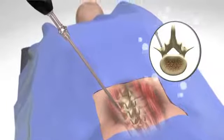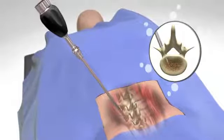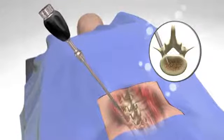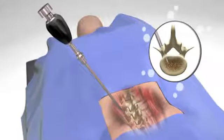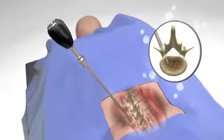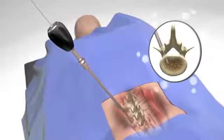Continue to advance the cannulated awl under fluoro. Keeping the cannulated awl in place, remove the inner stylet and advance the guide wire.